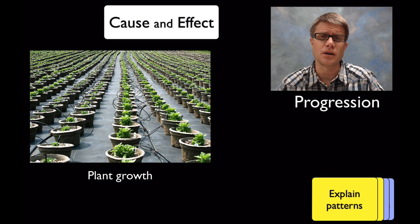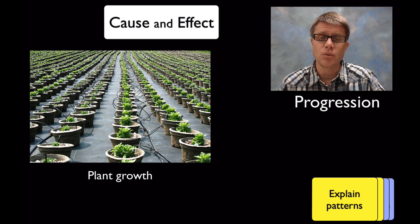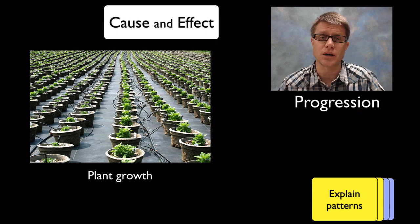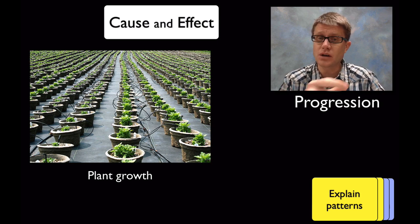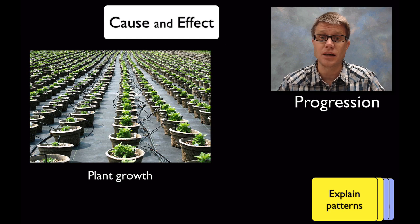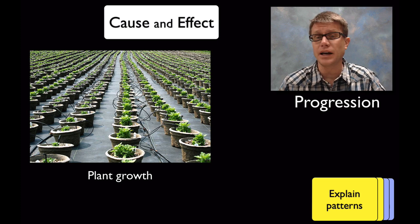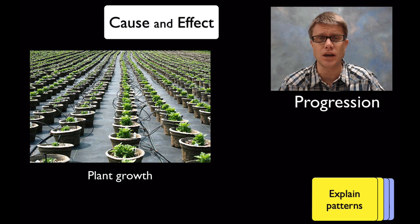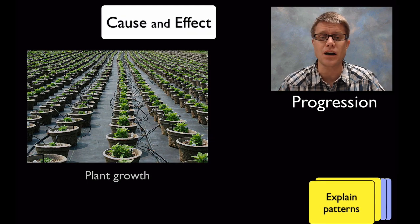Where would this occur at the early elementary grades? We want to start sensing patterns and take those patterns and link them to a cause. A great example could be plant growth. You could have kids growing plants and see what's affecting that. Water is clearly going to affect plant growth. They might say light is going to affect plant growth. But you want to come up with as many different causes as you can and have them listing those causes out.